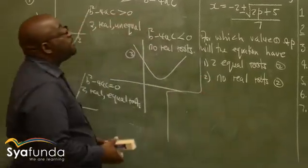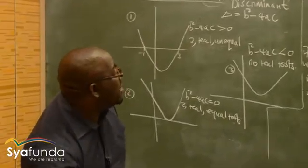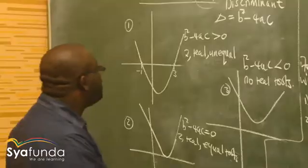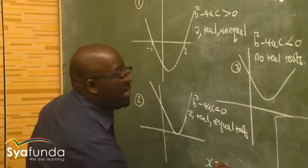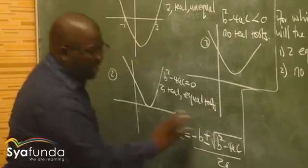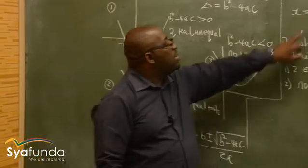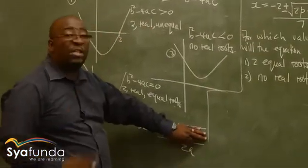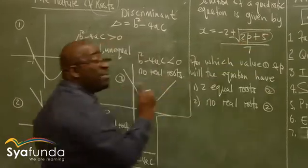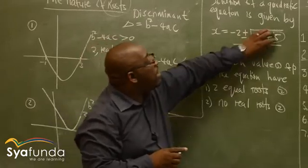Now let's look at the type of question that comes up. A solution of a quadratic equation is given as: x equals negative 2 plus or minus the square root of (2p + 5), all over 7. Comparing this to the quadratic formula x equals negative b plus or minus root of b squared minus 4ac over 2a, we see that 2p + 5 stands in the place of the discriminant b squared minus 4ac.